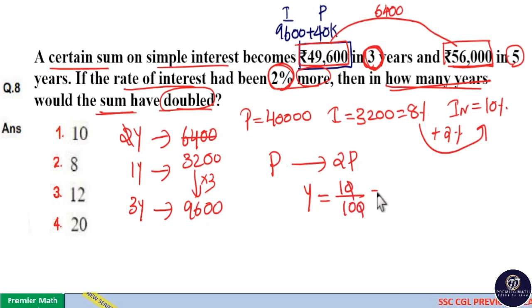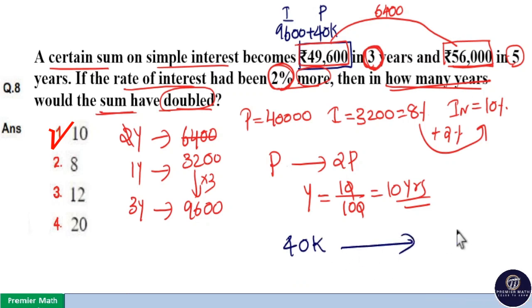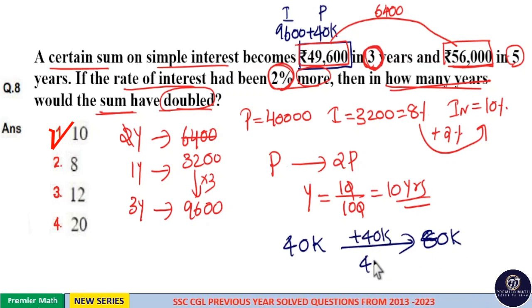Here, ₹40,000 is the principal. This ₹40,000 will double to ₹80,000. The increment of ₹40,000 is the interest that needs to be generated.